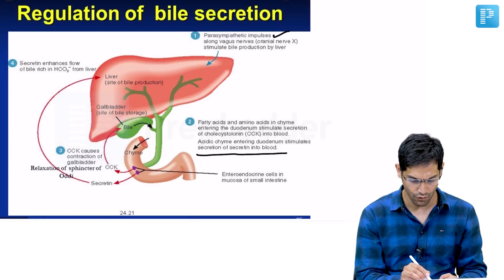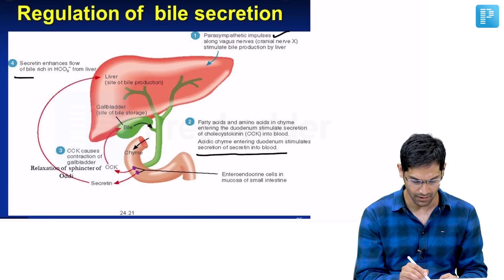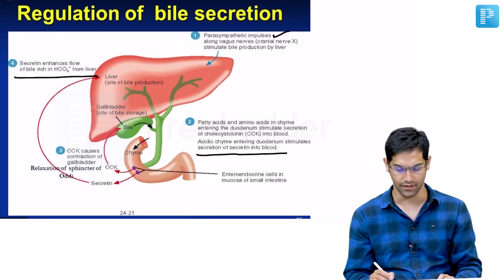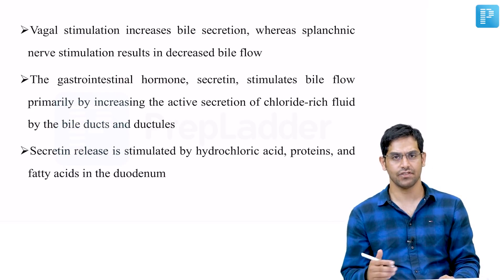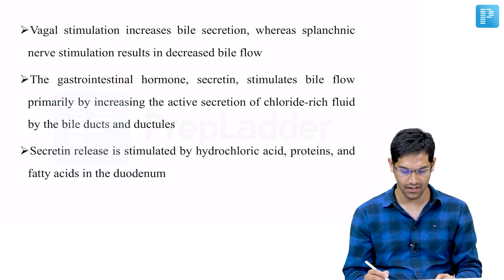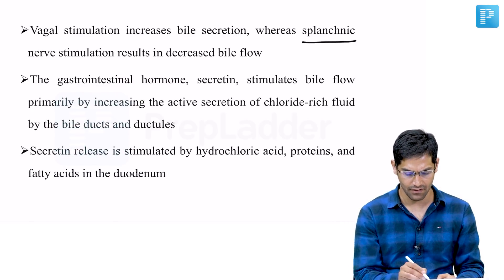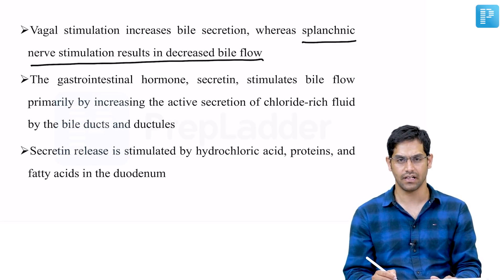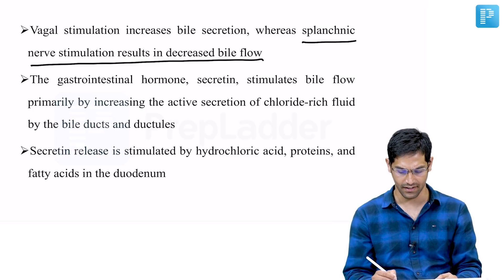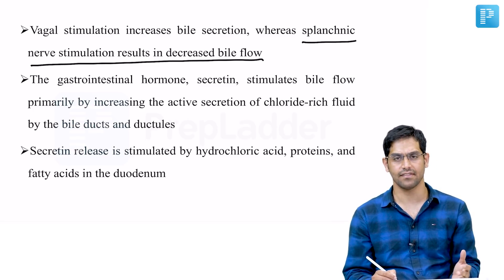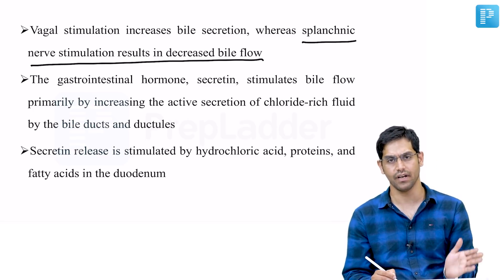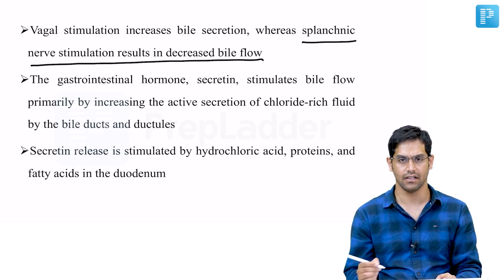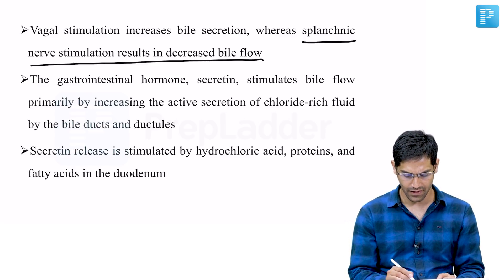Secretin enhances the flow of bile rich in bicarbonate from the liver by stimulating the cholangiocytes. Vagal stimulation causes an increase in biliary secretion, while splanchnic sympathetic nerve stimulation results in decreased bile flow. Secretin is the most important gastrointestinal hormone — it increases secretion of chloride-rich and bicarbonate-rich fluid via cholangiocytes.